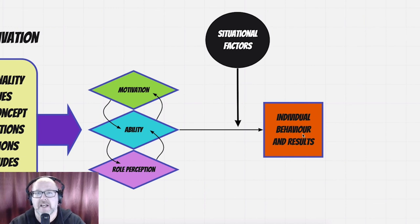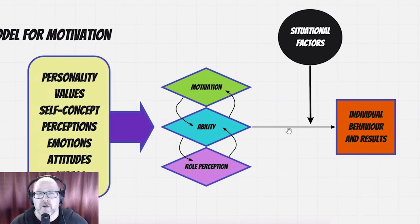This is the MARS model of motivation—MARS being an acronym for motivation, ability, and role perception. The model communicates that there are multiple aspects that go into understanding why an individual or team achieves a certain result or behaves in a certain way. It's not always internal like their personality, value systems, self-concepts, perceptions, or the stress they're under.